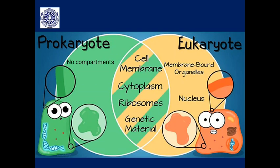Common features between prokaryotic and eukaryotic cells include cell membranes, cytoplasm, ribosomes, and genetic material. The prokaryotic cell is a simple cell without compartmentalized or membrane-bound structures as seen in eukaryotes, and it also lacks a definite nucleus.